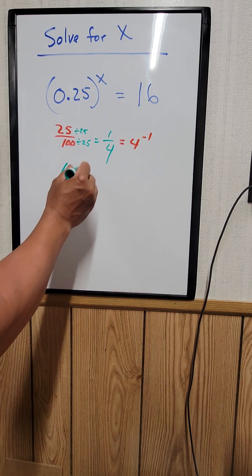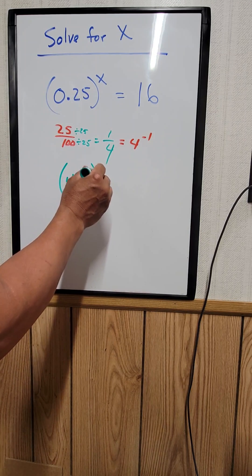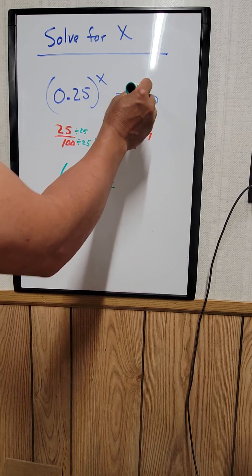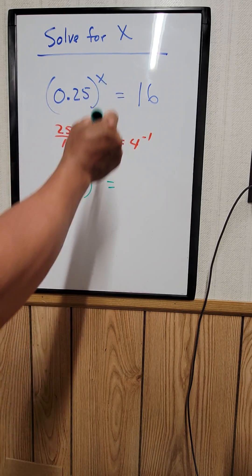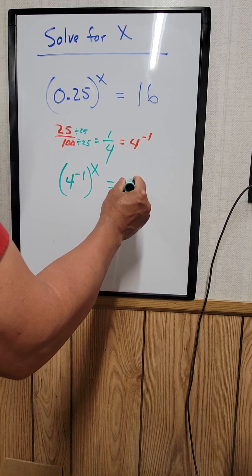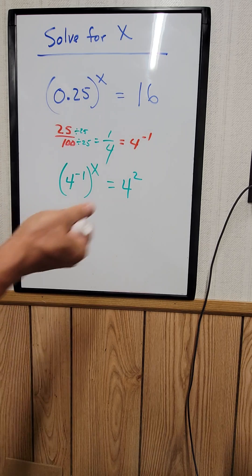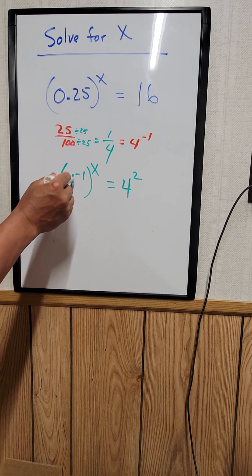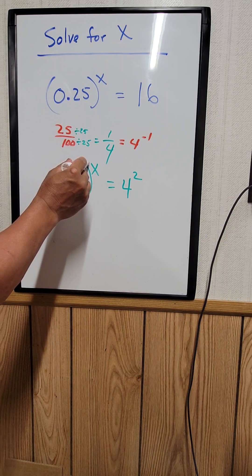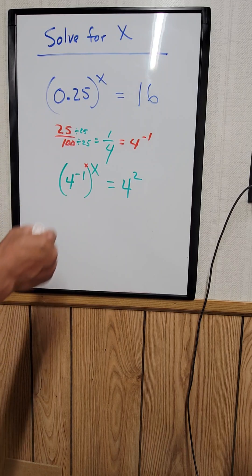16 is a perfect square, which is 4 squared. When you have a power raised to a power, you just multiply the powers. So this becomes 4 to the negative x equals 4 squared.